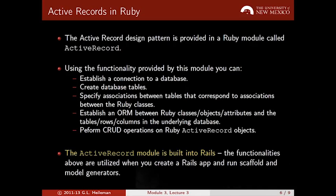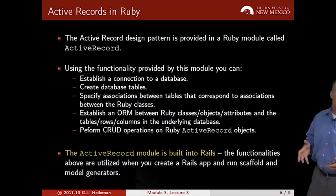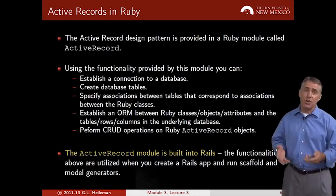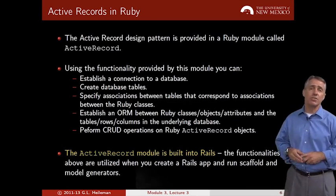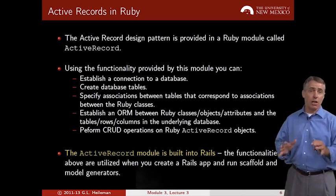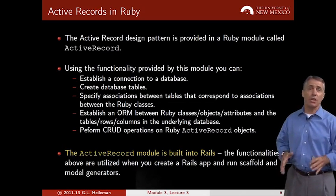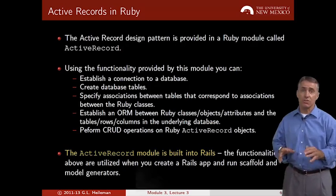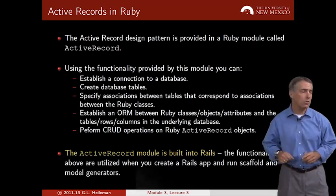The Active Record module is built directly into Rails, and this is a prime example of convention over configuration that we've talked about previously. Don't fight against it — Active Record does a lot for you in a Rails application, so let's learn how to use it properly.